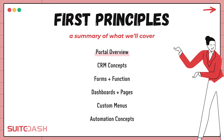Let's look at how this training is laid out. First, we'll look at a portal overview and help you understand what a portal is. Then we'll move on to CRM concepts, then forms and the functionality of forms and how they work inside the platform. Then we'll look at dashboards and pages, the differences between those and how they are used. We'll spend some time looking at custom menus and how those change based on your needs. And then we'll explore automation concepts to make sure you really understand how this platform is different and how it can become the operating system for your organization.